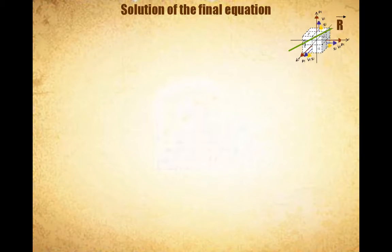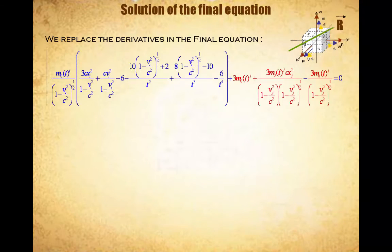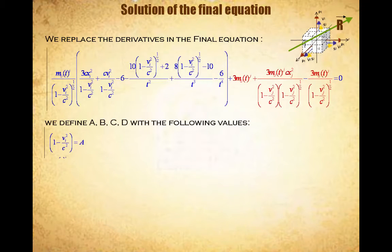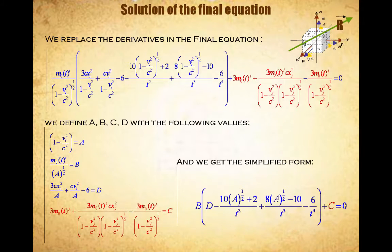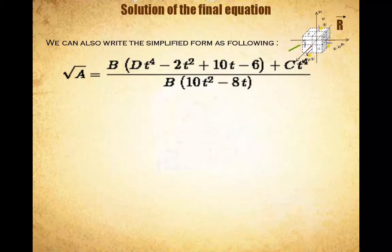Now we replace the derivatives in final equation. After this we define the temporary variables a, b, c, d with the following values, thus obtaining the first final simplified form of the equation, final form that we can also write as follows.